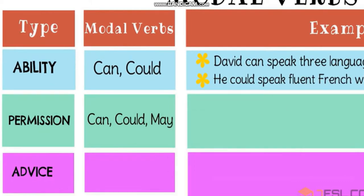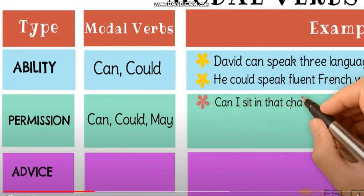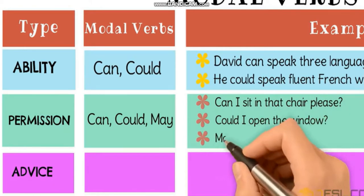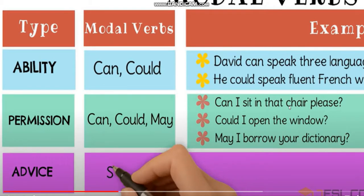When we want to ask permission, we can use 'can,' 'could,' or 'may.' For example: 'Can I sit in that chair, please?' — 'Could I open the window?' — 'May I borrow your dictionary?' All these are used when we want to ask permission.